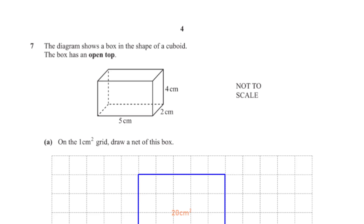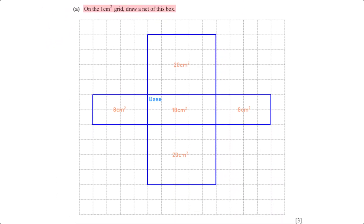The diagram shows a box in the shape of a cuboid with an open top, on the 1 centimeter square grid. Draw a net of this box. A cuboid with an open top has five faces. Start by drawing the base with dimensions 5 cm by 2 cm. At the top and bottom connect faces of 5 cm by 4 cm, and on the sides connect faces of 2 cm by 4 cm.